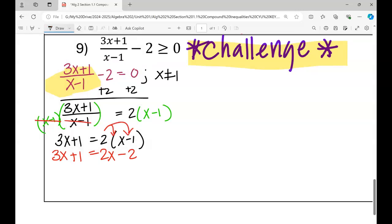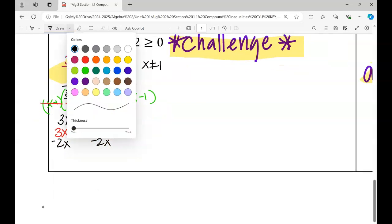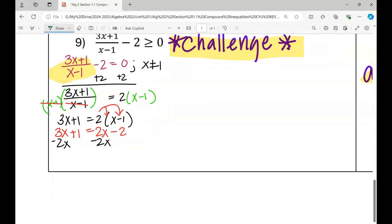Then from here, we will try to solve normally. Minus 2x of both sides. And then I'm going to speed this up by moving the 1 to the right side. That will allow me to simplify. So x is going to be negative 3.